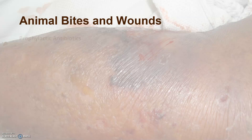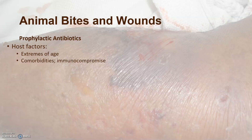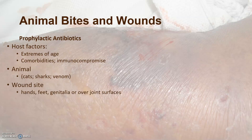Let's think about animal bites and wounds. Do we use prophylactic antibiotics? It depends. With certain host factors — extremes of age, comorbidities such as diabetes or HIV, or immunocompromise — we may consider this. The animal involved matters: cats in particular cause infections because they cause deep puncture wounds. Shark bites are also likely to be infected due to the organisms involved and significant tissue damage. Envenomating animals also increase infection risk. Bites to the hands, feet, genitalia, and over joint surfaces, as well as deep or crush injury wounds, are more likely to need prophylactic antibiotics.